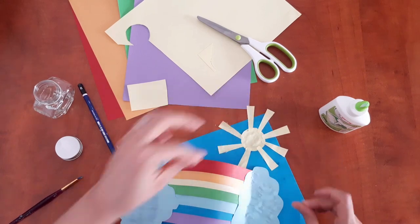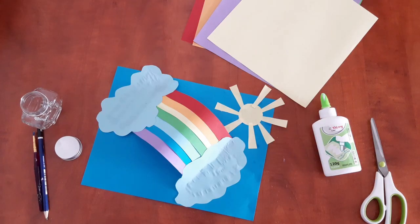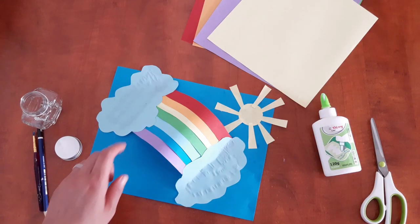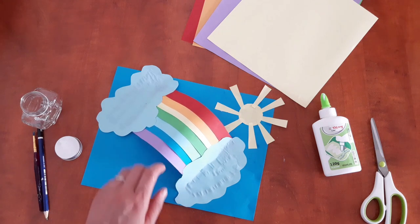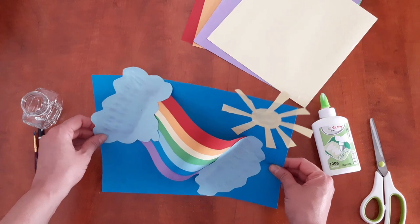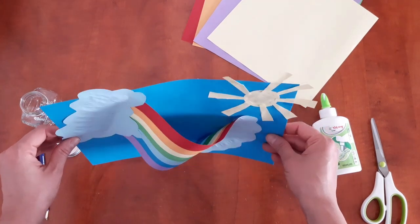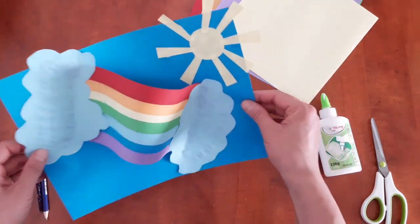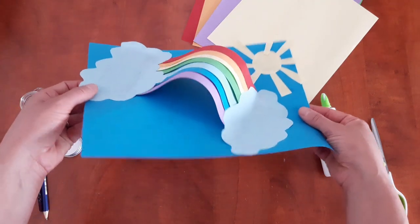And here it is, your 3D rainbow. It looks like an accordion, like this. Enjoy, and I can't wait to see how yours is looking. I hope you managed to create this effect.